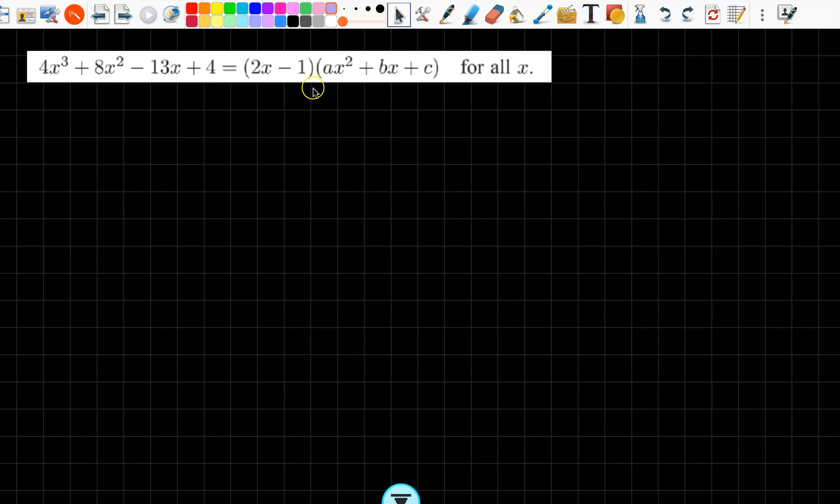Let's start with the first question. We want to first be able to find our a value. When we times the 2x by the ax squared, it has to give us this here, so clearly a must be 2. Similarly, when I times my constant terms together, minus 1 times c has to equal 4. So that means c must be minus 4.